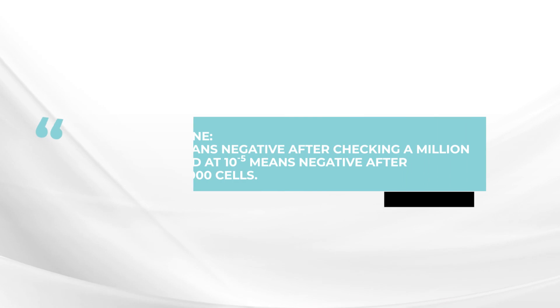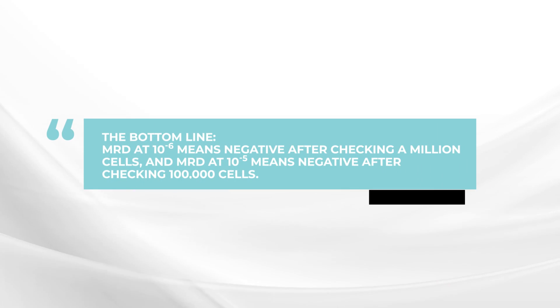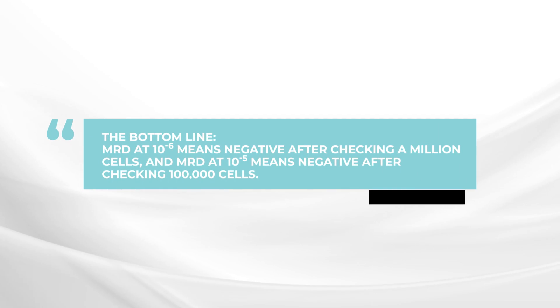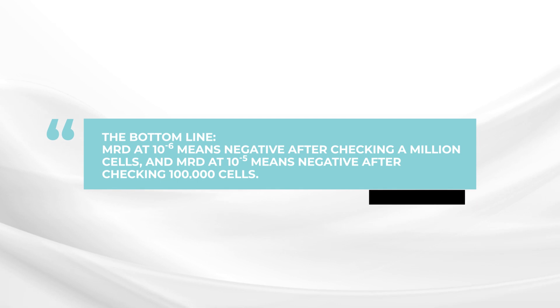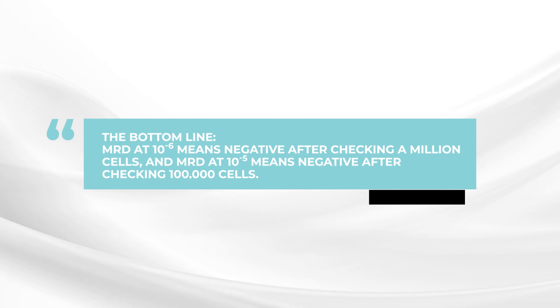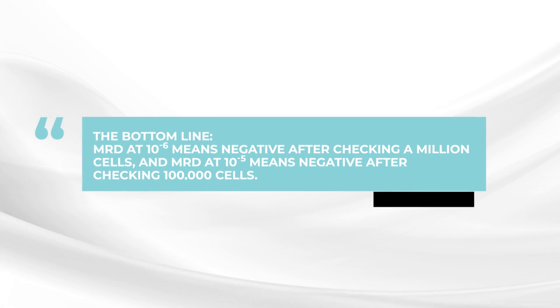Bottom line: MRD means minimal residual disease. 10 to the minus 6 means negative after checking a million cells. 10 to the minus 5 means negative after checking 100,000 cells. These are things to keep in mind as you look at those numbers comparing one treatment versus another.